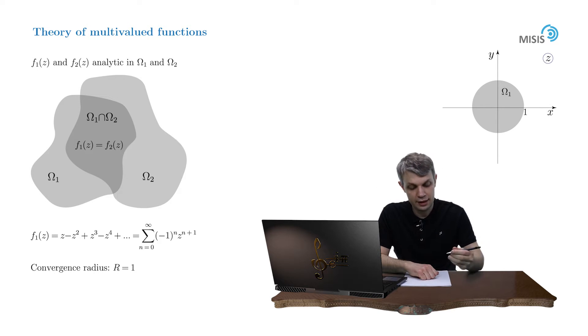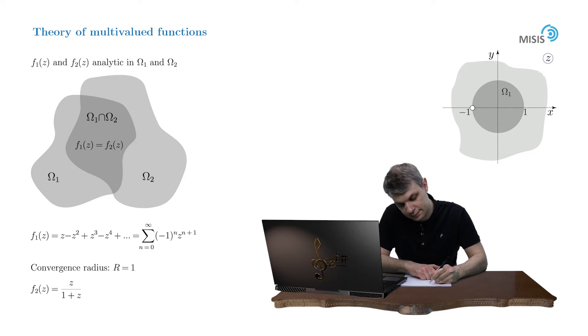Now let's consider another function f₂ equals z over 1 plus z. Well, this function is defined in the entire complex plane with the only exception of point z equals negative 1, which is obviously a simple pole.